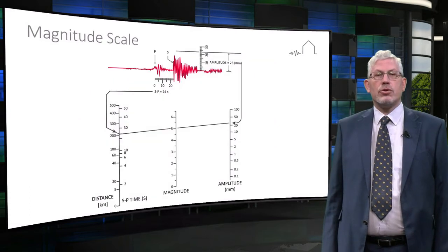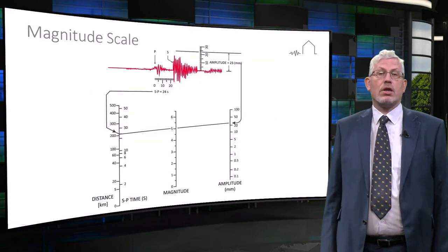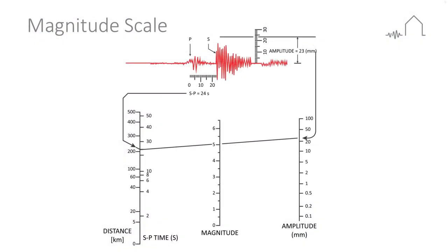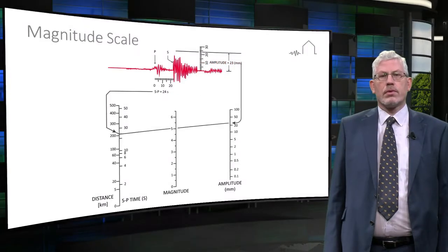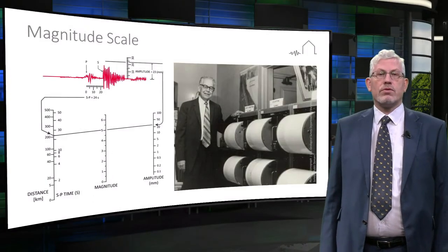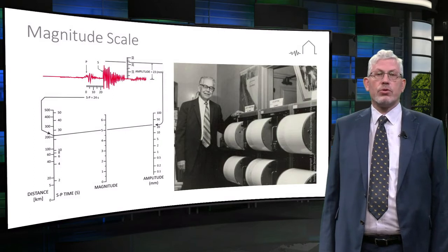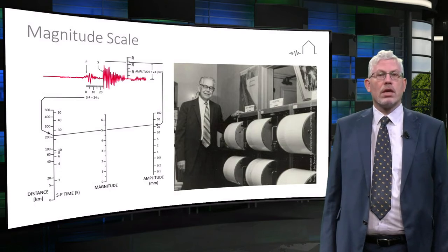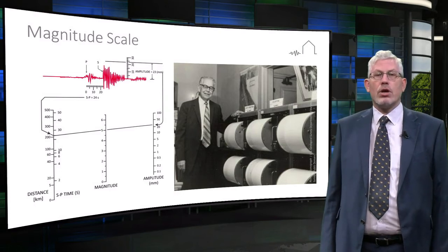The magnitude is a measure of the amount of energy released during the earthquake. The energy is released in the form of shockwaves. These waves are recorded by seismometers around the world and are the basis for calculating the earthquake's magnitude. The concept of magnitude was developed in 1935 in California by Charles Richter as a mathematical device to compare the size of earthquakes, and is therefore known as the Richter scale.